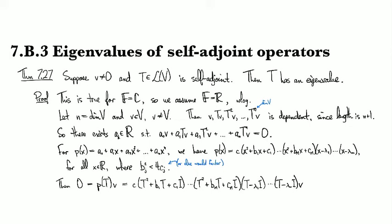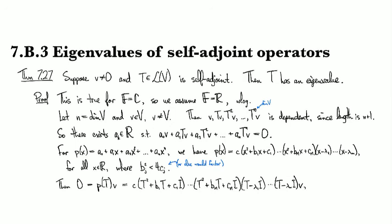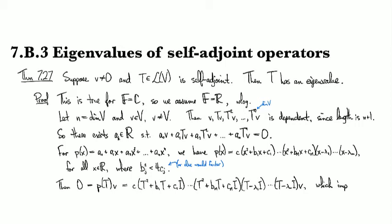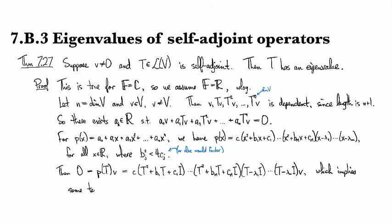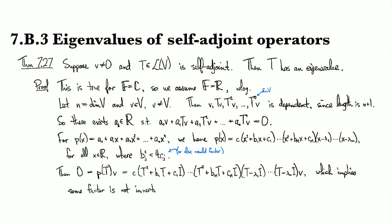And so p(T) applied to v is equal to 0, and so this implies that some factor is not invertible, right? Because v is in the null space of this p of T.